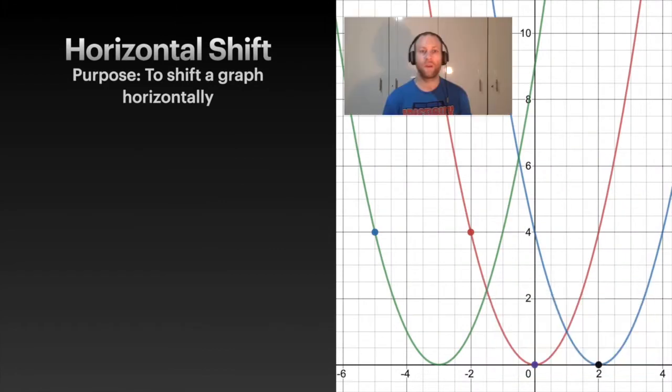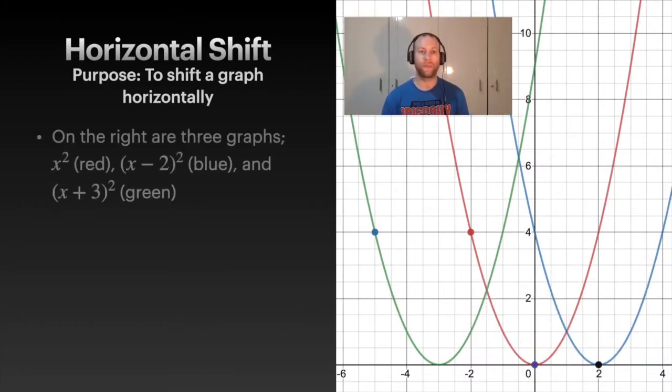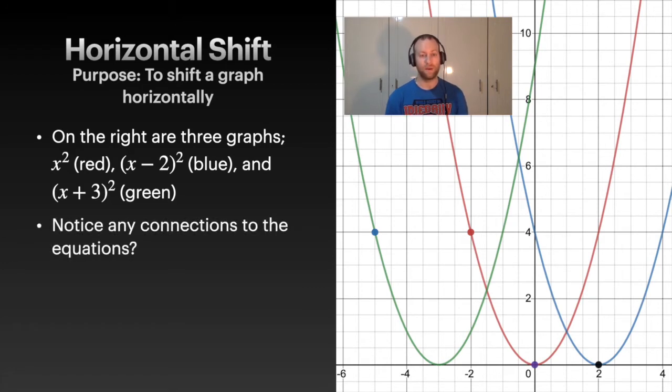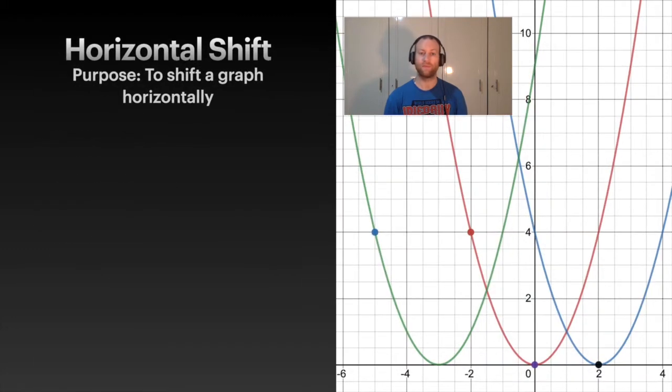Let's do some horizontal shifts. So here we've got three graphs. In the middle, the red one, this is x squared, this is the original graph. We've got x minus 2 squared, that's the blue, and we've got x plus 3 squared which is green. So these are the three different graphs here. You'll notice maybe a connection between the equations to the shifts.